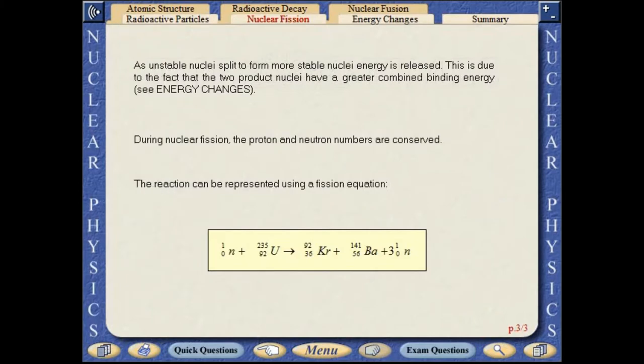As unstable nuclei split to form more stable nuclei, energy is released. This is due to the fact that the two product nuclei have a greater combined binding energy. During nuclear fission, the proton and neutron numbers are conserved. The reaction can be represented using a fission equation.